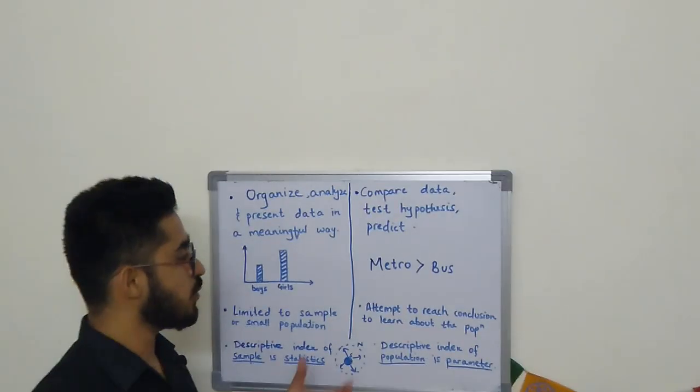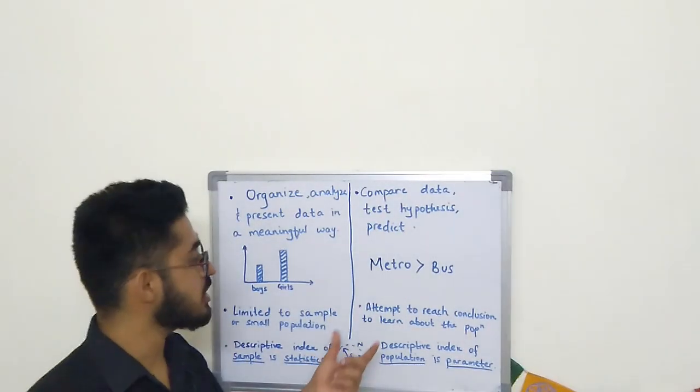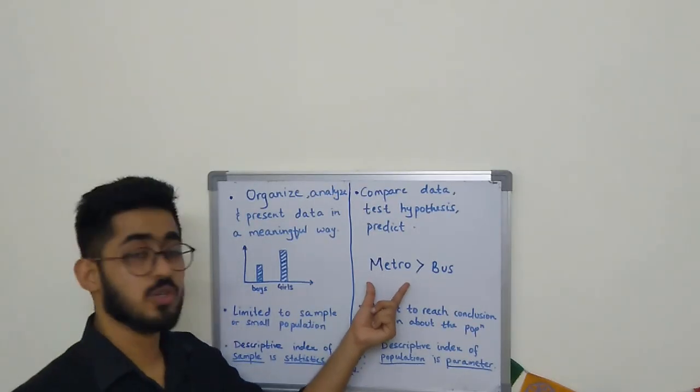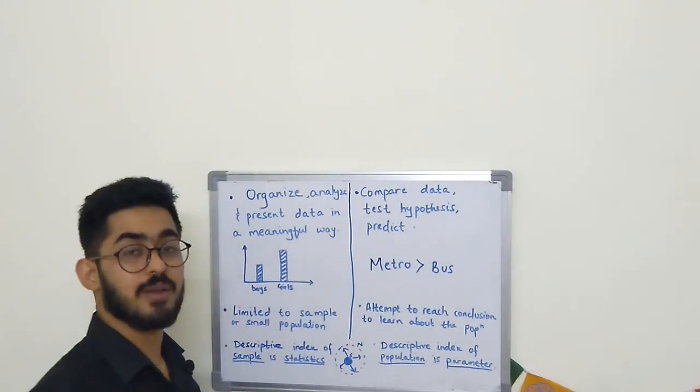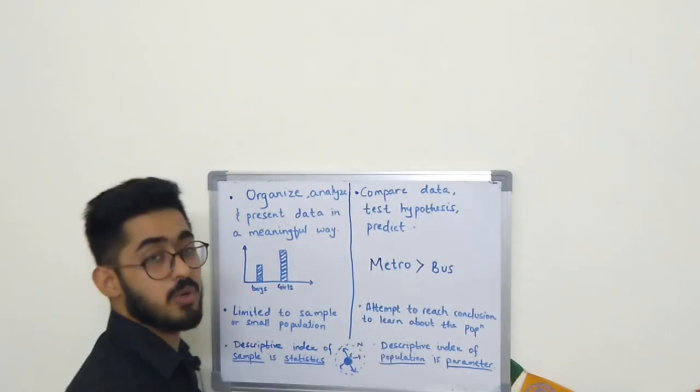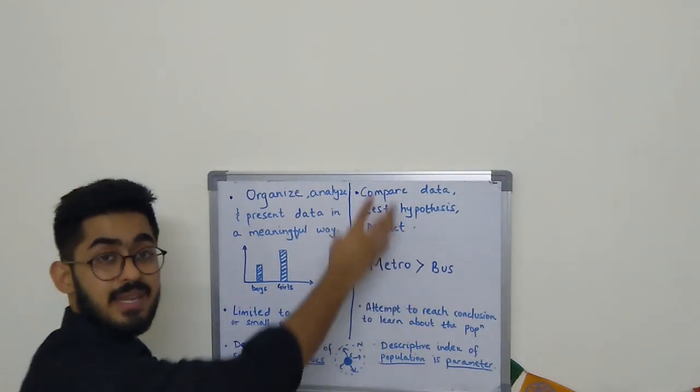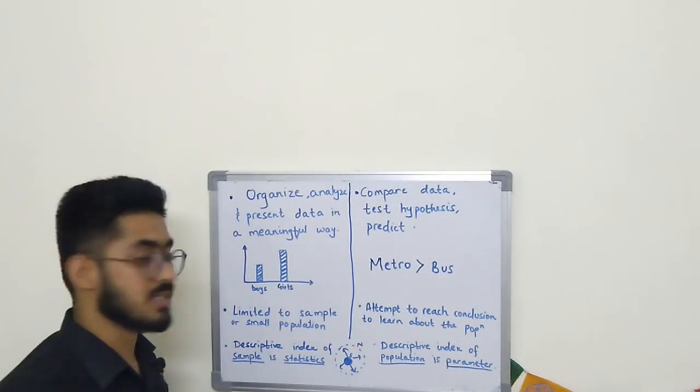For example, when comparing data, we can say that on average, people commuting through metro prefer to wear branded shoes more than people commuting through bus. All these things—prediction and comparing data—happen in the inferential part of statistics.